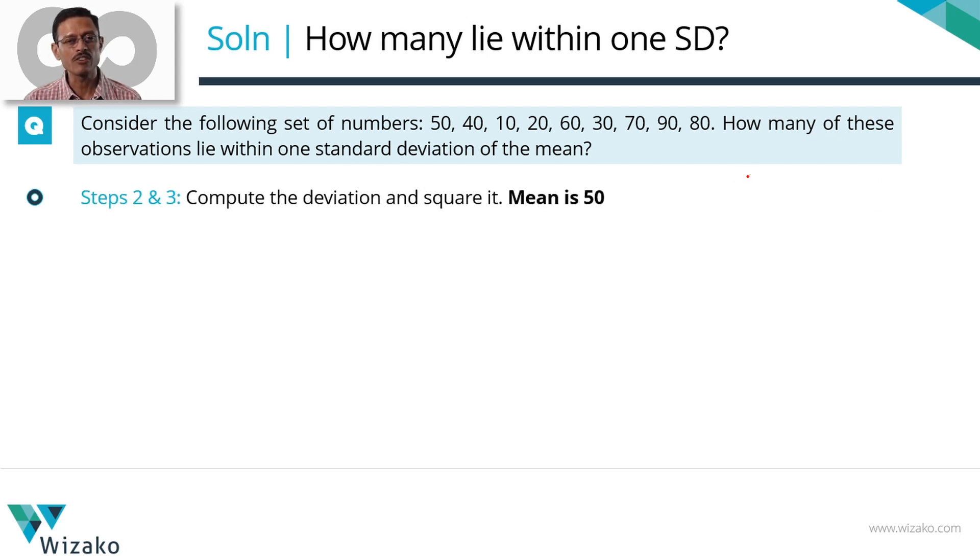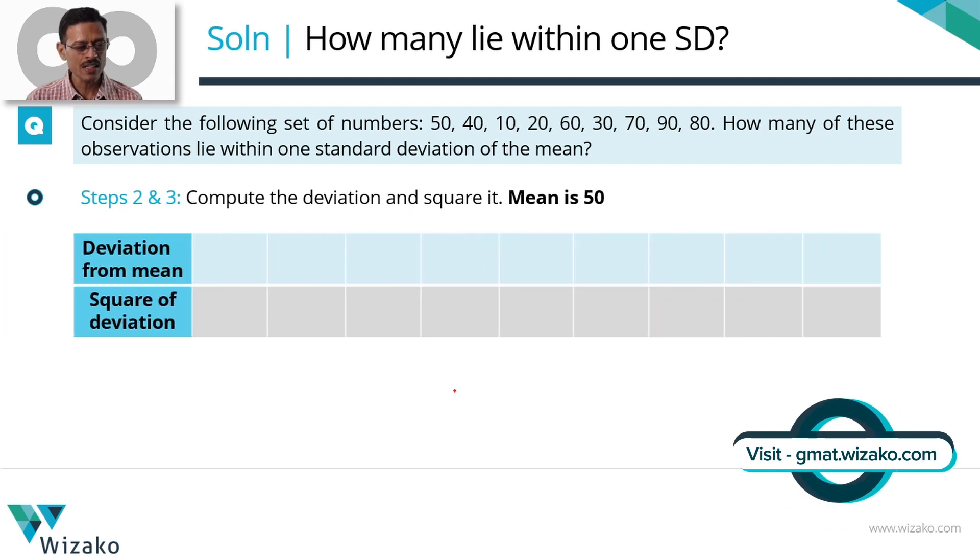Steps 2 and 3 for us are finding out the deviation and the square of the deviation. Start with this. I'm going to write these 9 numbers up here in an ascending order: 10, 20, 30, 40, 50, 60, 70, 80 and 90.